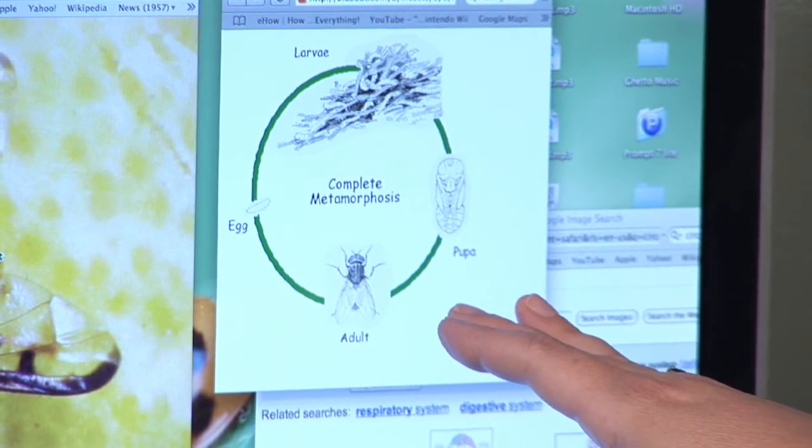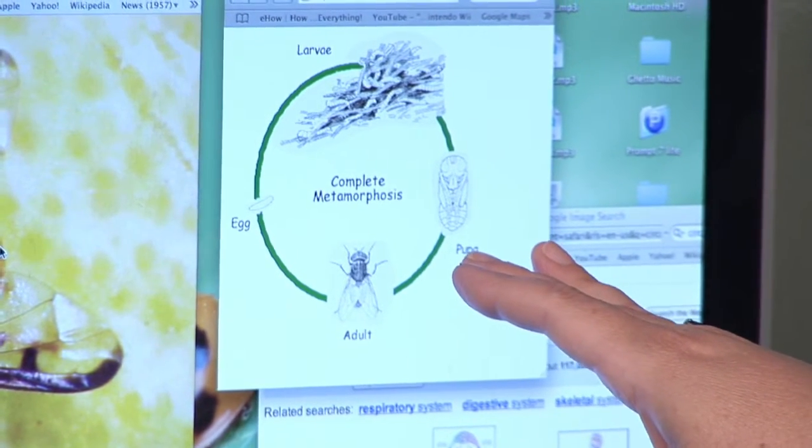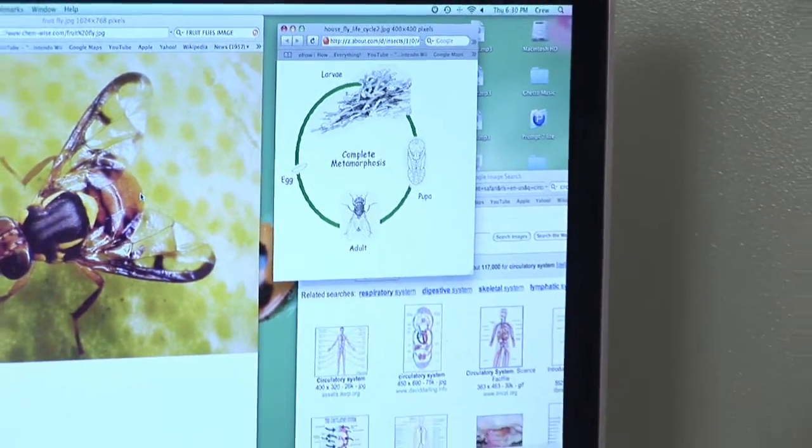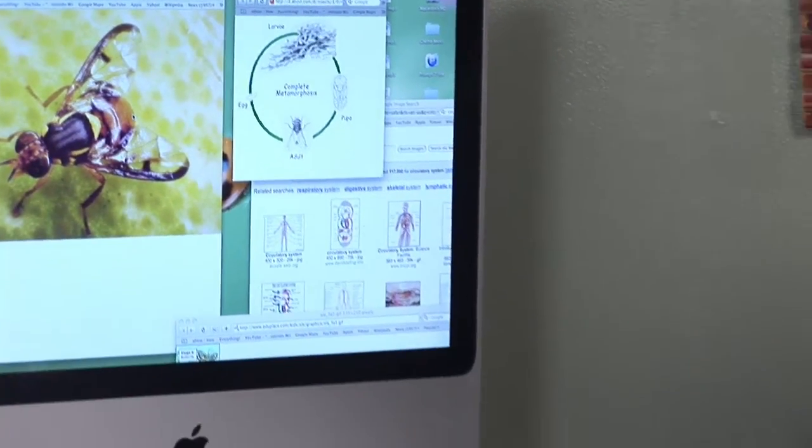Once that adult fruit fly hatches, it's ready to start laying eggs and making more fruit flies in your kitchen. So if you want to get rid of the fruit flies, the trick is to get rid of the fruit. I'm Janice Grenetti and this is How Do Fruit Flies Grow.